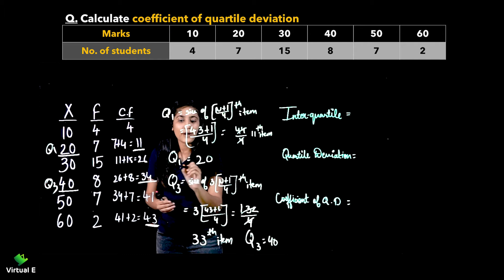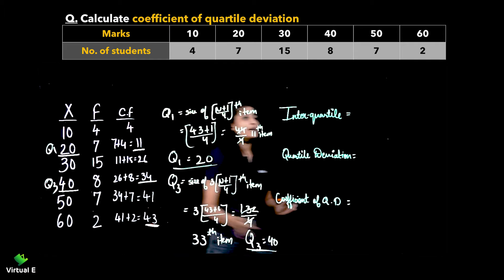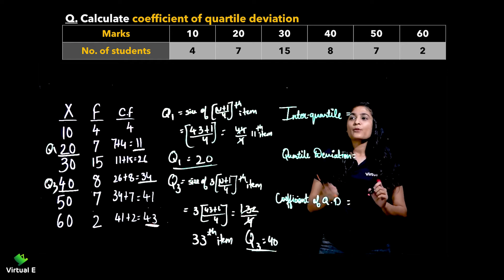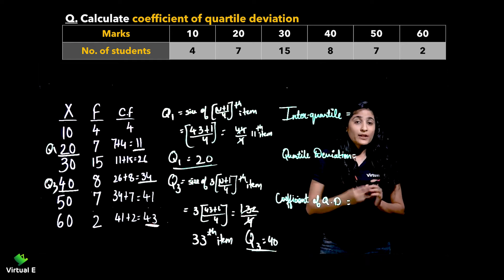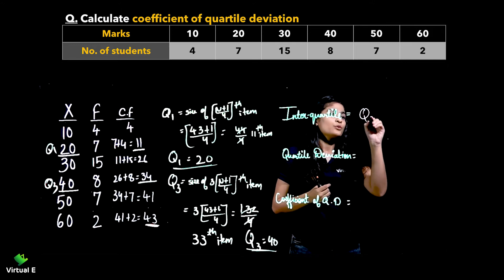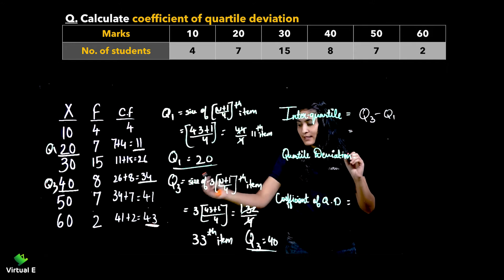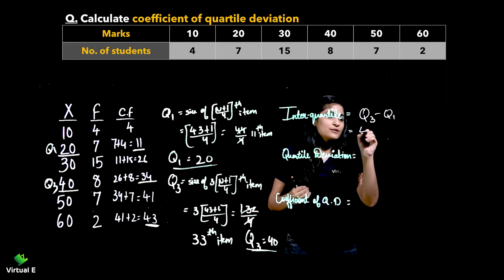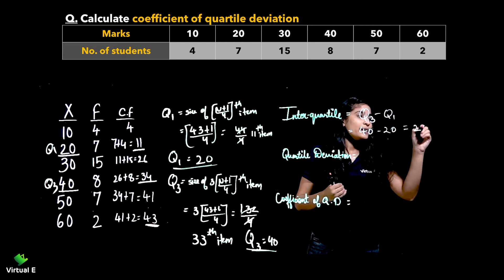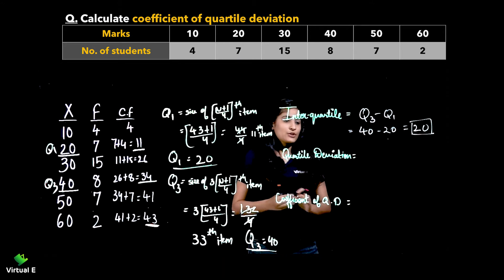Now we have Q1 and Q3. Next, we apply the formula. The first thing to find is the interquartile range. For interquartile range, we compute Q3 minus Q1, which is 40 minus 20. So the final answer is 20. The interquartile range is 20.